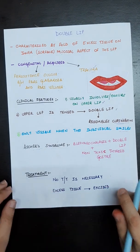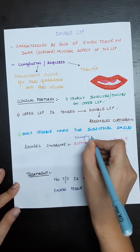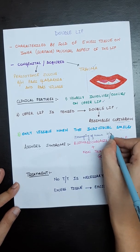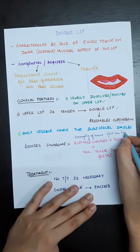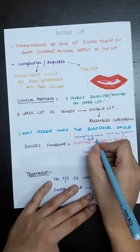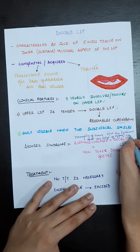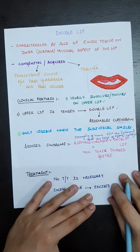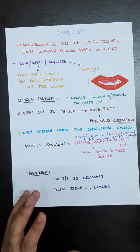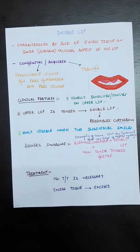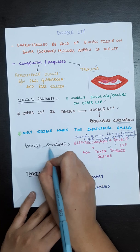What is blepharochalasis? Blepharochalasis is basically drooping of tissue between the eyebrow and the edge of the upper eyelid — you can think of it as a swollen eyelid, or inflammation of the eyelid. When it is associated with non-toxic thyroid goiter as well as double lip, we call it Ascher syndrome.